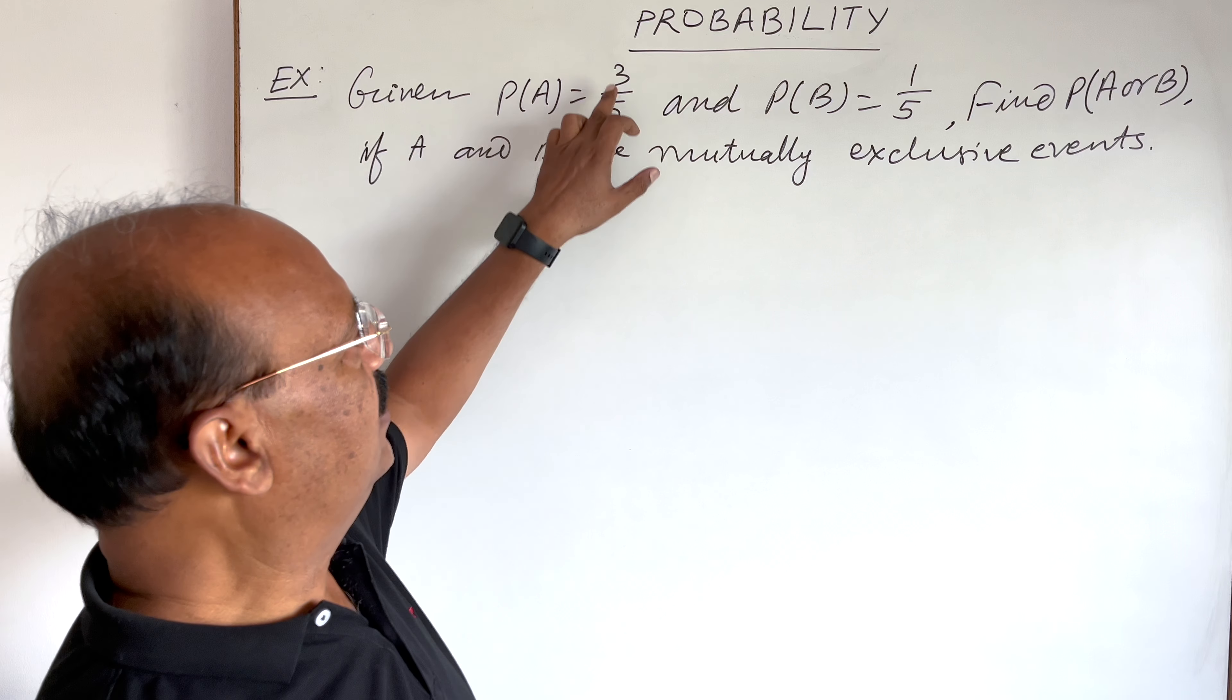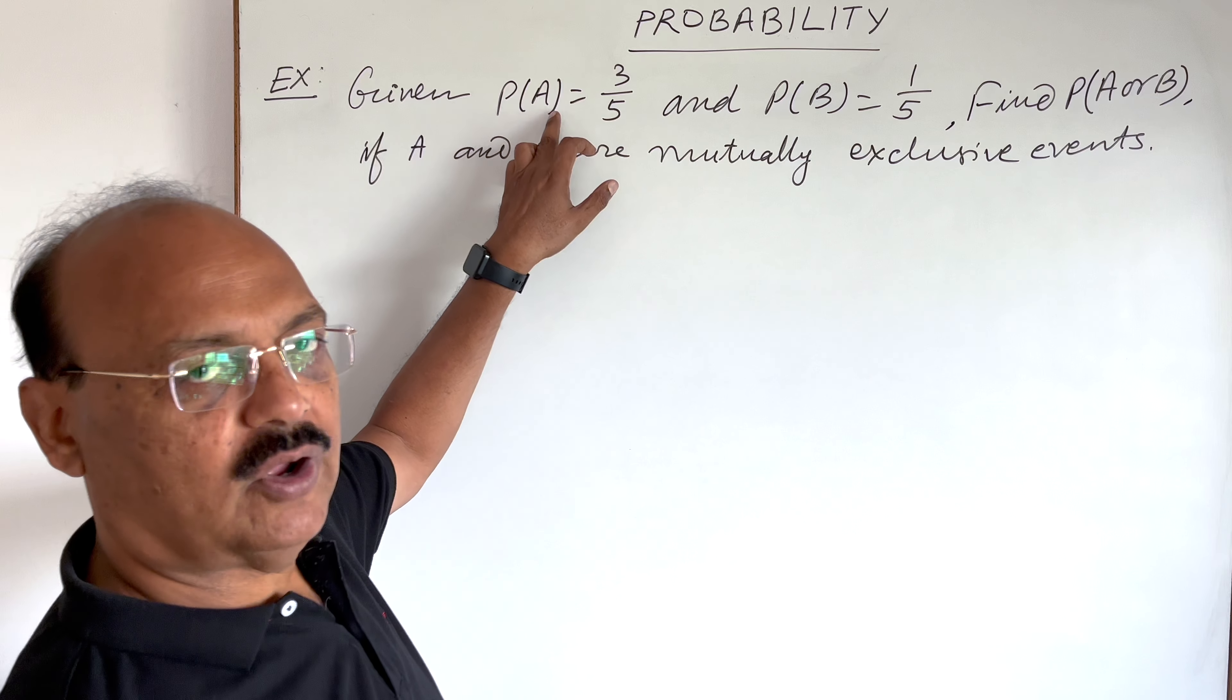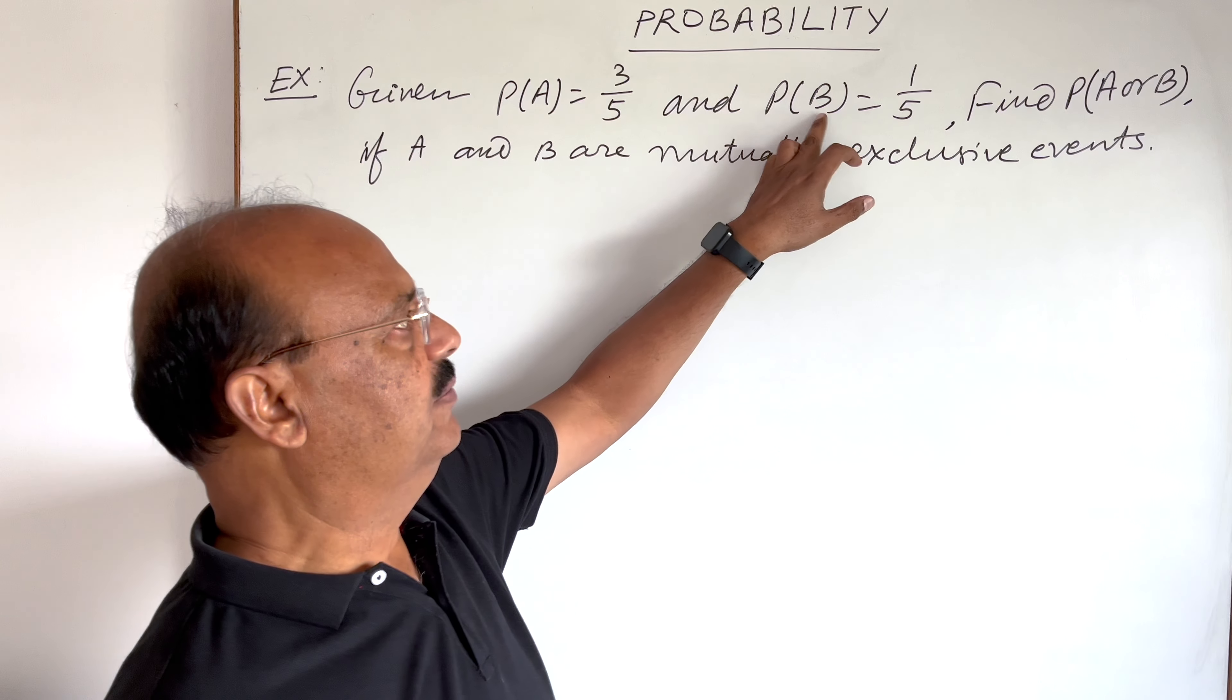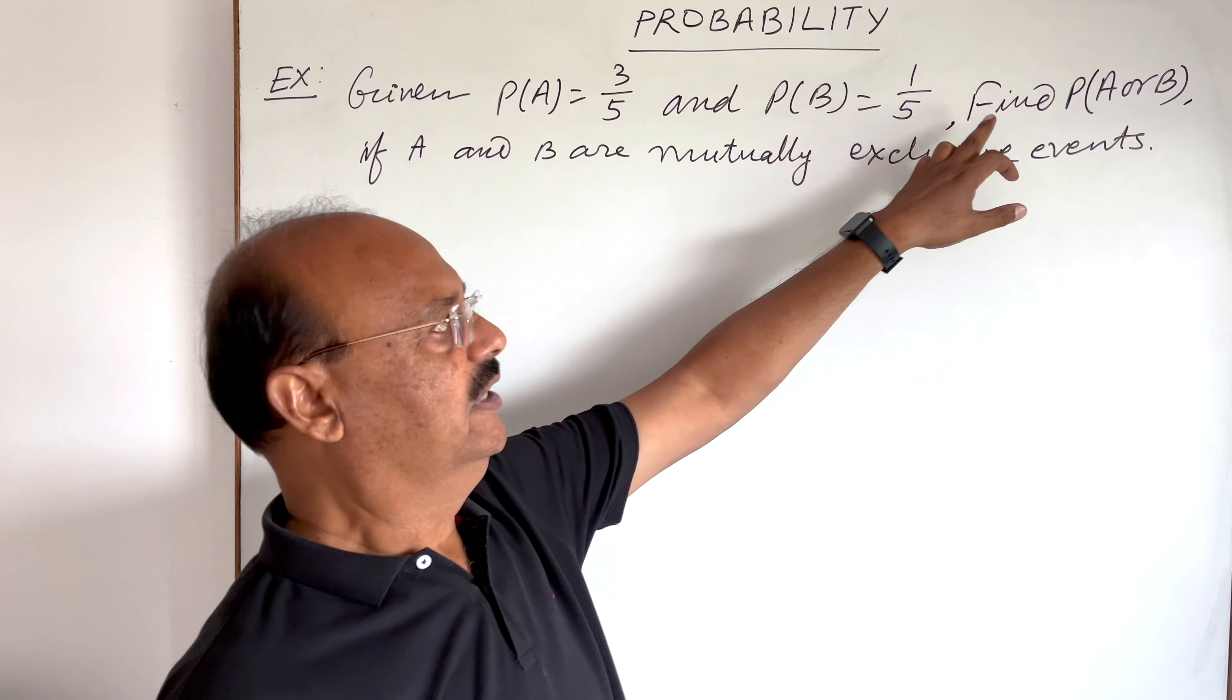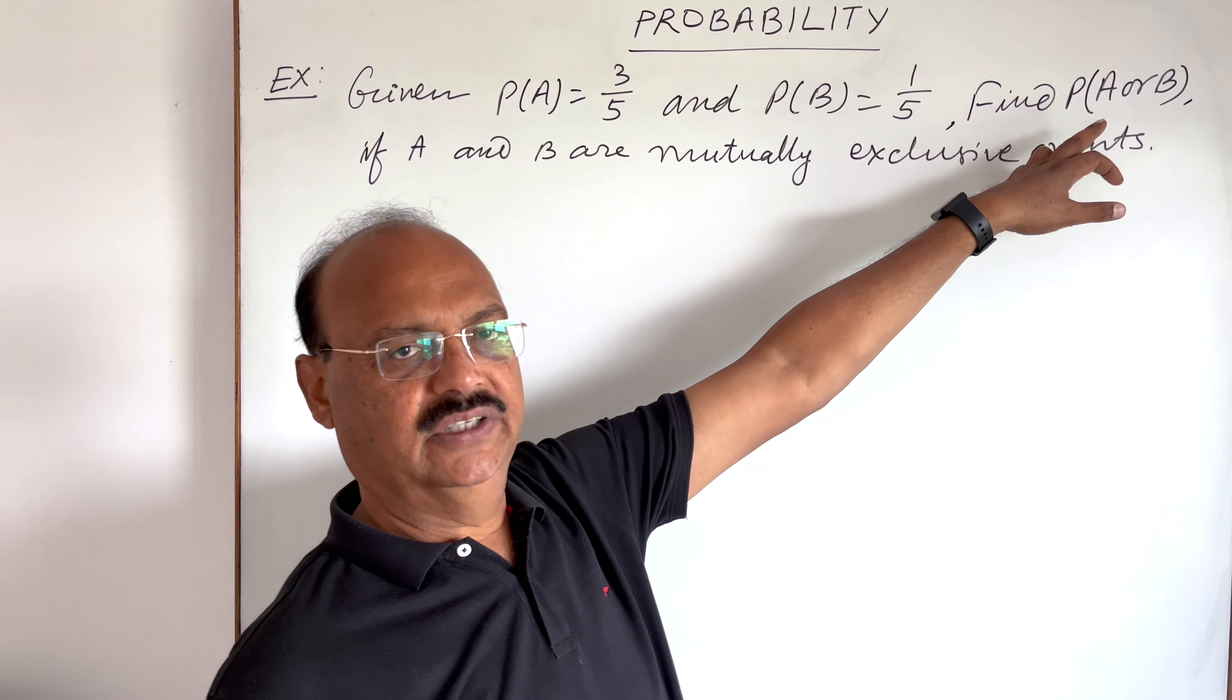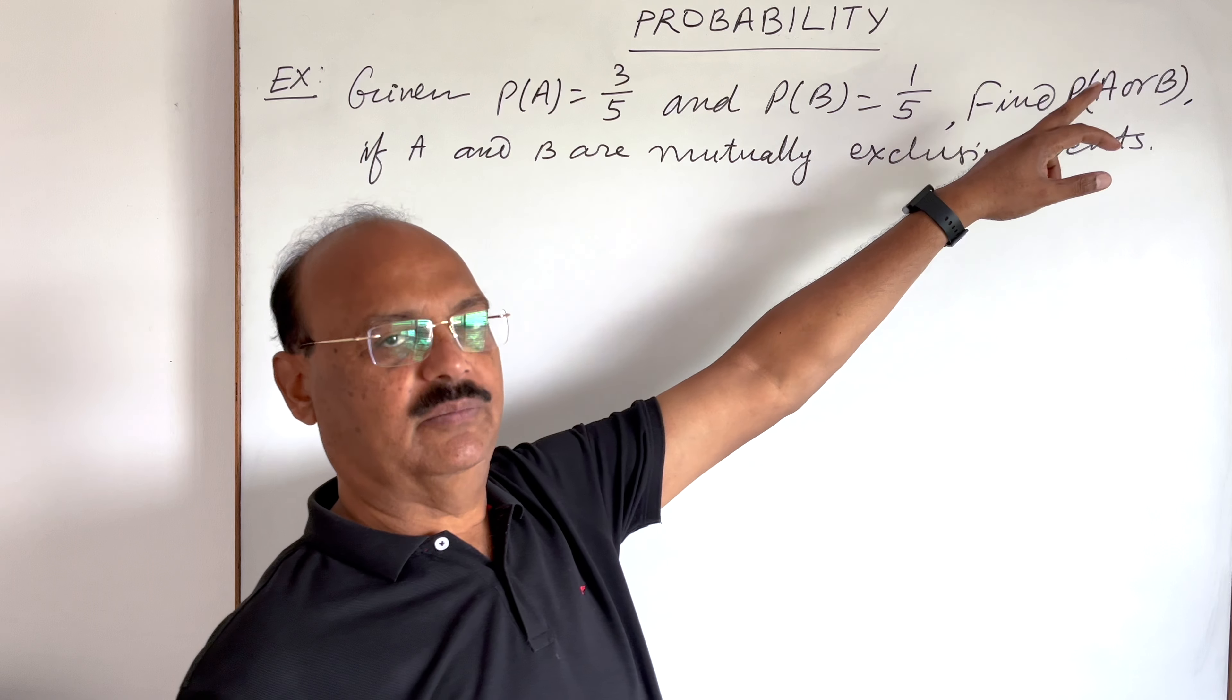Given P(A) is equal to 3 by 5, PA means probability of event A. P(A) is 3 by 5 and probability of event B, P(B) is 1 by 5. Find the probability A or B, A or B means A union B.